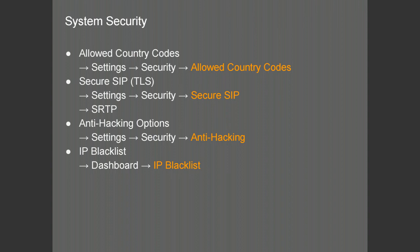We will talk about some of the security aspects of 3CX — for example the allowed country codes, which is under Settings and Security. Secure SIP using TLS certificates is possible with 3CX, enabled under Security and Secure SIP. We will also talk about the configuration of secure audio, the secure RTP. We will then move on to the anti-hacking options, which is under Settings and Security under the anti-hacking tab. We will then finish off with the IP blacklist, which is on the dashboard and which you can configure.